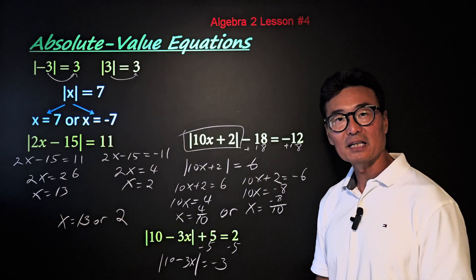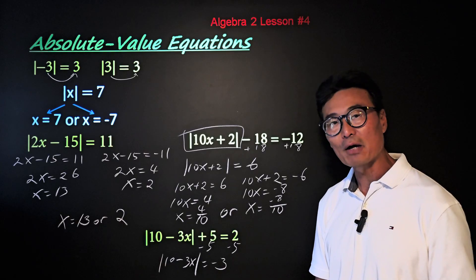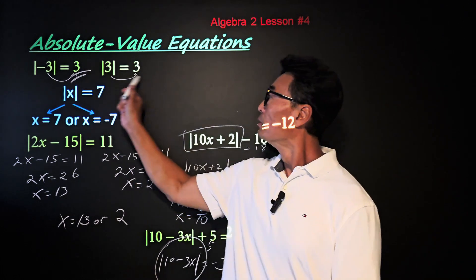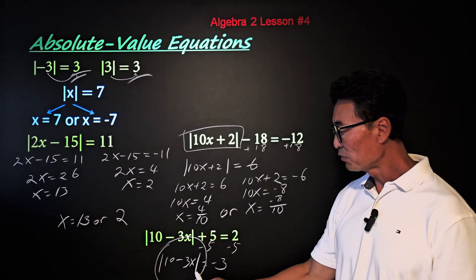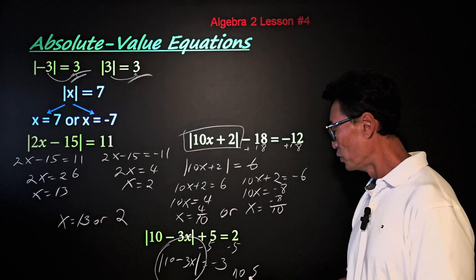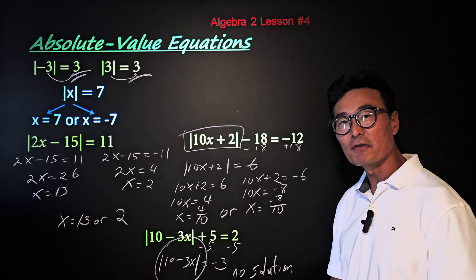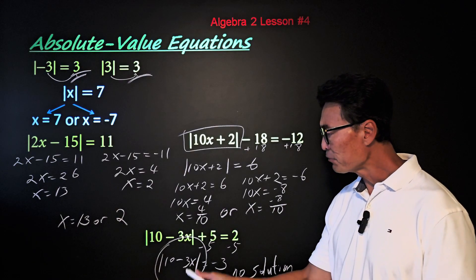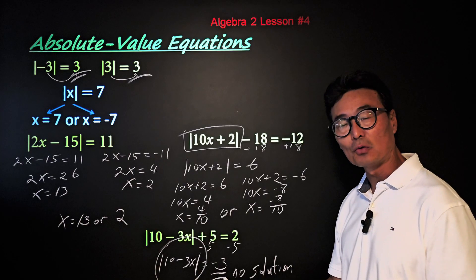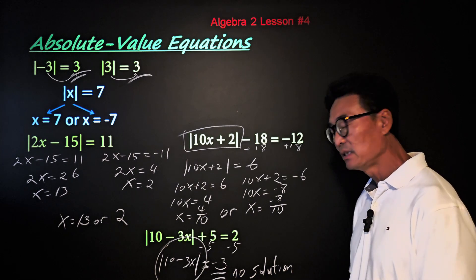Here, if you weren't thinking carefully, you might just separate it into two equations — one with positive 3 and one with negative 3. However, by definition, the absolute value of anything must always be positive. So when you have an absolute value equation equal to a negative value, the answer is simply no solution. There's no reason to work it out further, because even if you get an answer, plugging it into the original equation will not work. Remember: when the right side is a negative number after isolating the absolute value, the answer is always no solution.